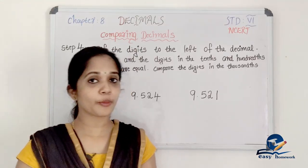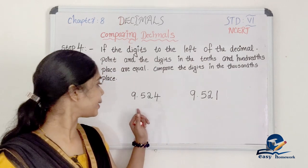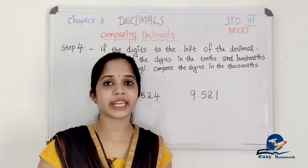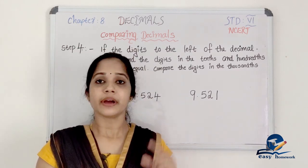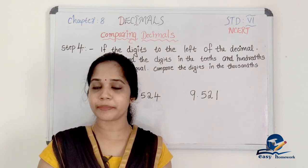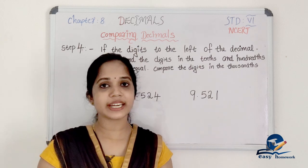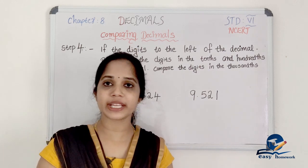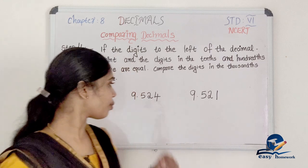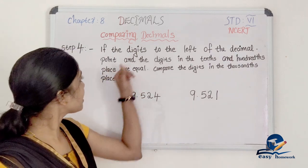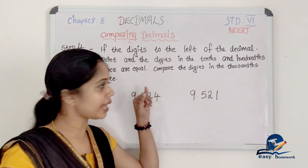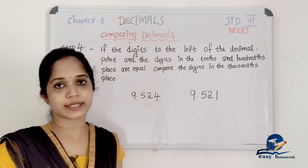Next, we compare 9.524 and 9.521. We compare the digits on the left side of the decimal point — equal. Tenths place is equal. Hundredths place is equal. So we go to the thousandths place. If the digits to the left of the decimal point and the digits in the tenths and hundredths places are equal, compare the digits in the thousandths place.